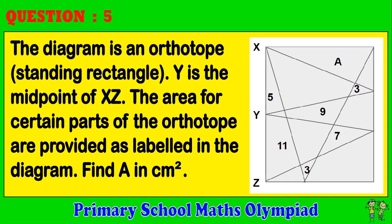Question 5. The diagram is an orthotope — a standing rectangle. Y is the midpoint of XZ. The areas for certain parts of the orthotope are provided as labelled in the diagram. Find A in cm².